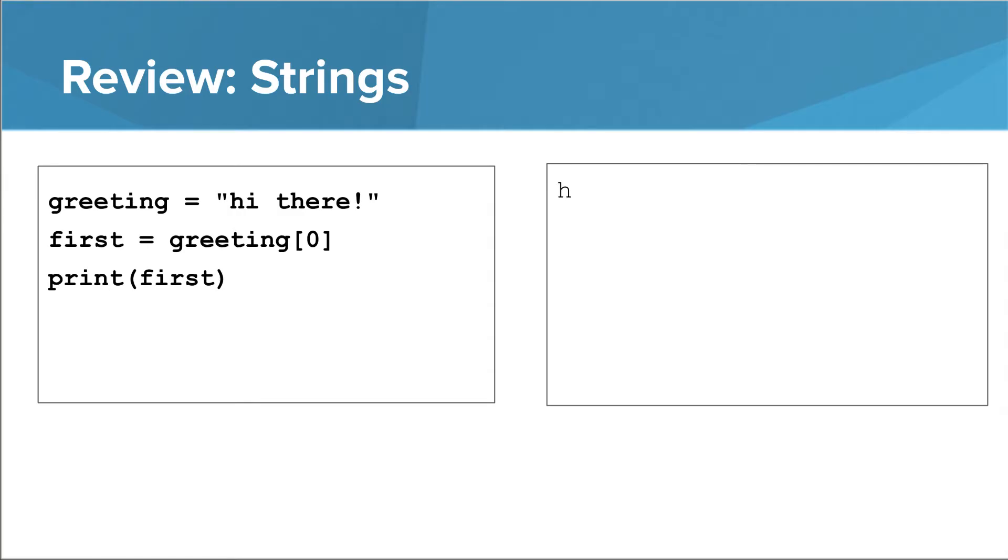In the last lesson, you learned how to extract a single character out of a string using square brackets and an index. You can use that character in a variable assignment, like this. The variable first then holds a string that just has the letter h.